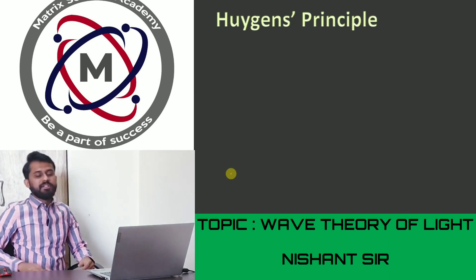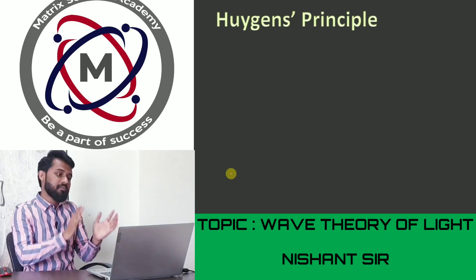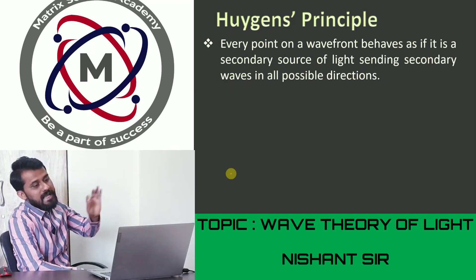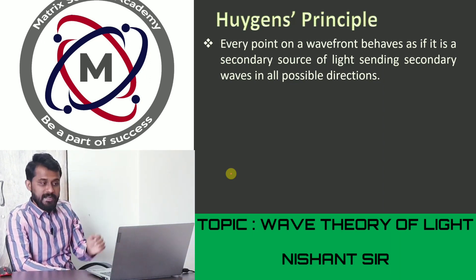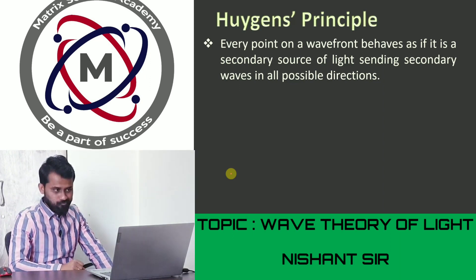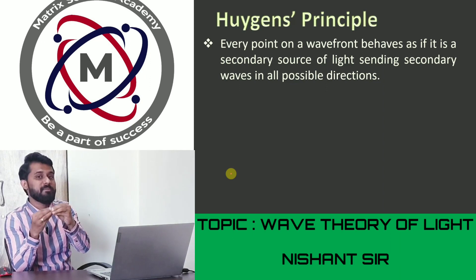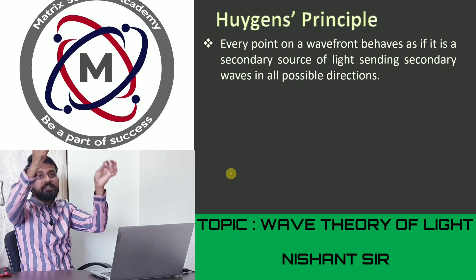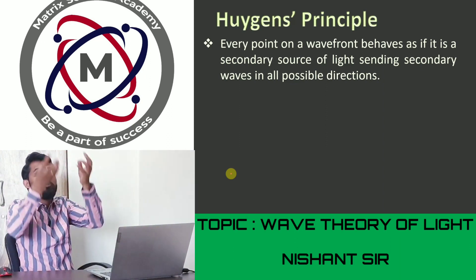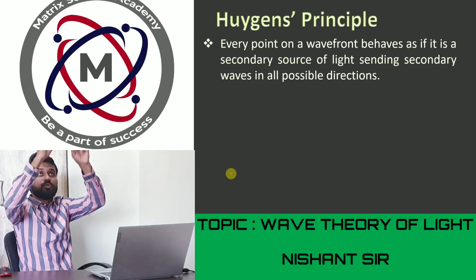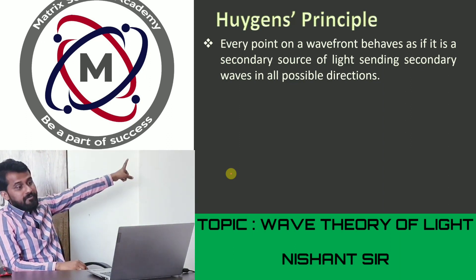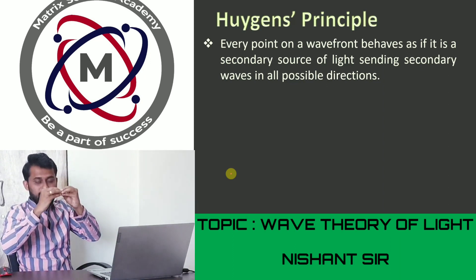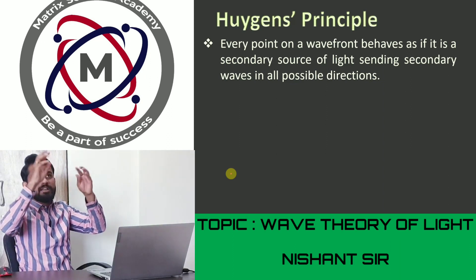Now we move to Huygens' Principle, which is a section within Huygens' Wave Theory. The first point: every point on a wavefront behaves as if it is a secondary source of light, sending secondary waves in all possible directions. This means if there is a primary source (like a bulb), the light forms a wavefront, and every point on that wavefront acts as if it is itself a secondary source emitting light in every direction.